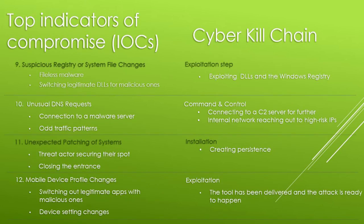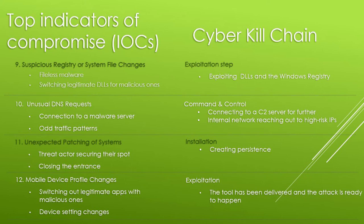Suspicious registry or system file changes: registry changes are a way that threat actors infect a host, such as packet-sniffing software used to collect and analyze packets from the network. The main and most important places for an attacker are the registry run keys and scheduled tasks. If using Microsoft, one can enable registry auditing with a Windows event logger. Fileless malware can also come in the form of registry changes. As for system changes, a common attack is DLL hijacking — the attacker replaces a legitimate DLL file with a fake one containing malicious code, placing it in a folder listed as higher priority. Unlike registry changes, DLL hijackings are easier to detect. This falls under the exploitation step, where a system vulnerability is being exploited.